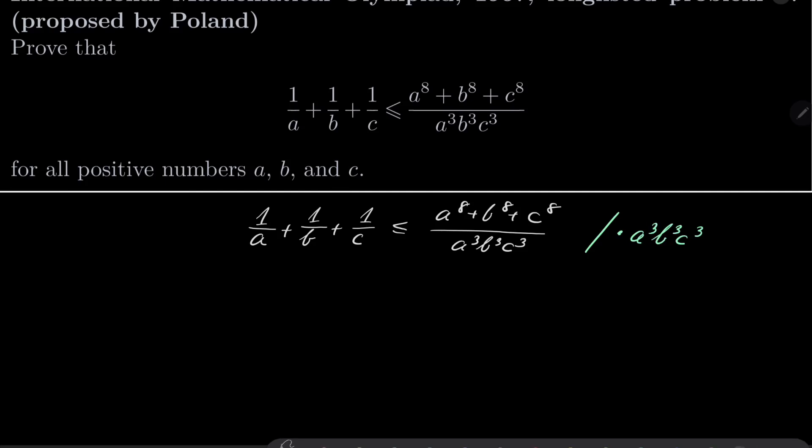Notice that then I am left with a²b³c³ + a³b²c³ + a³b³c² and on the right hand side we have a⁸ + b⁸ + c⁸. And then we also multiply everything by 2.